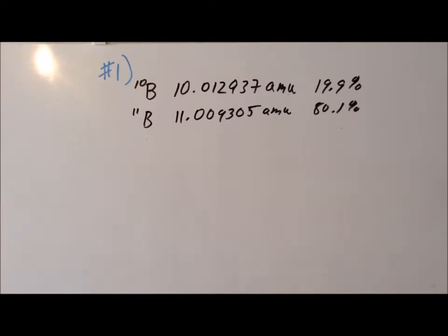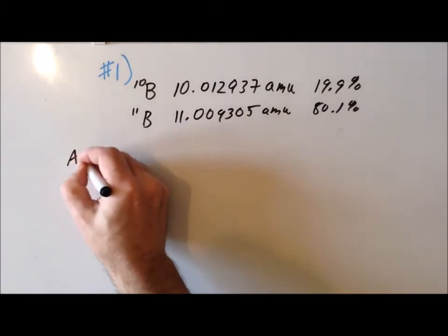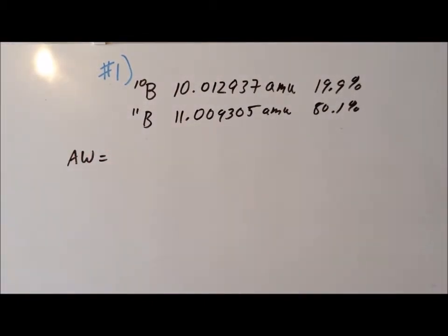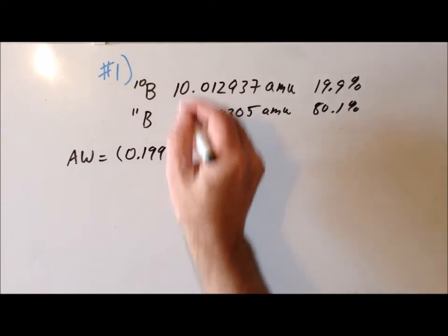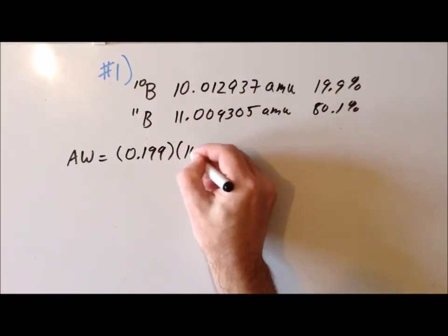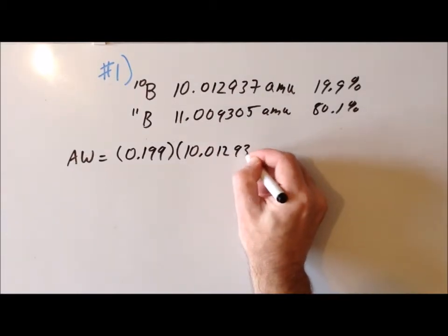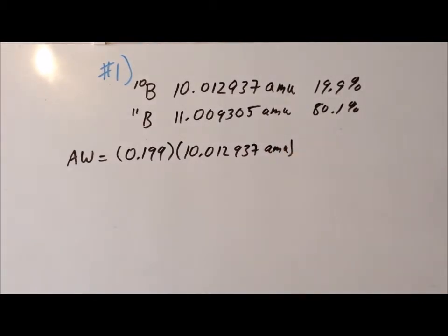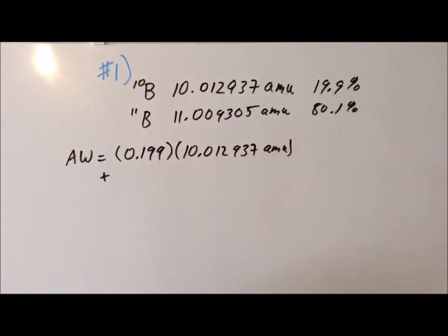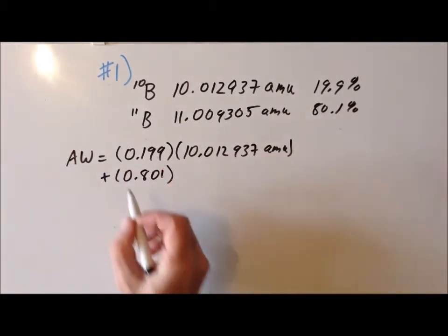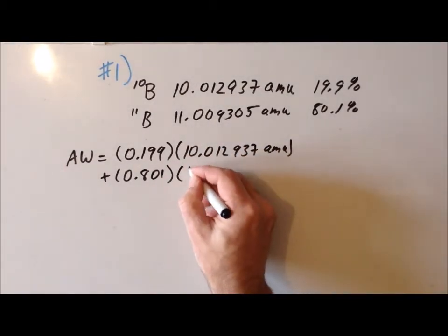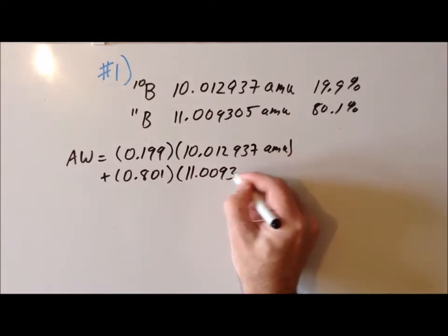So we can compute the atomic weight of boron. Let's put AW for atomic weight. We're going to use the weighted average technique. The probability that we would find a particular boron atom as boron-10 is 19.9%, which we write as the decimal 0.199, and we multiply that by the actual mass of that isotope: 10.012937 atomic mass units. That accounts for boron-10. For boron-11, the probability is 80.1%, and we multiply that by the actual mass of the isotope: 11.009305 atomic mass units.